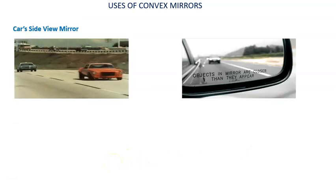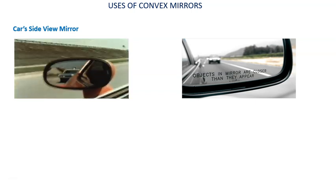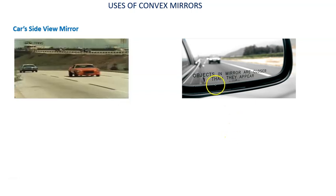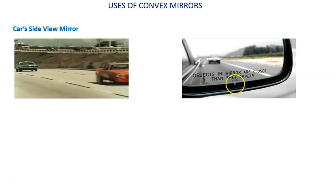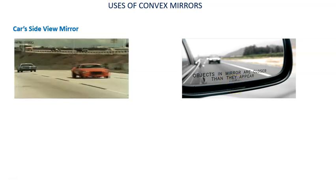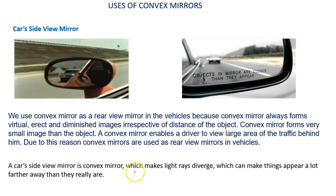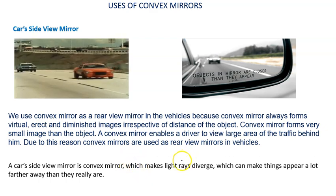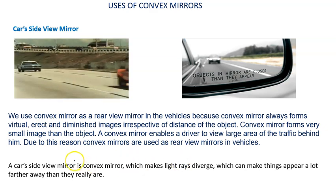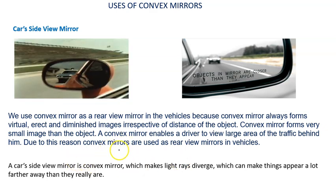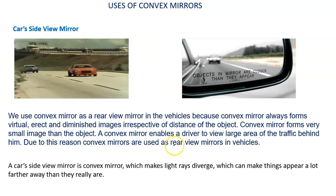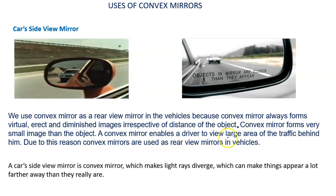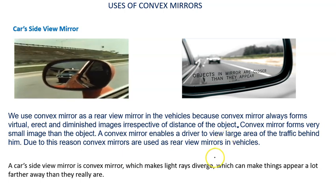Cars use convex mirrors as side-view mirrors. When you purchase a new car or bike, you see the language: 'Objects in the mirror are closer than they appear.' We use convex mirrors as rear-view mirrors in vehicles because a convex mirror always forms a virtual, erect, and diminished image irrespective of the distance of the object.